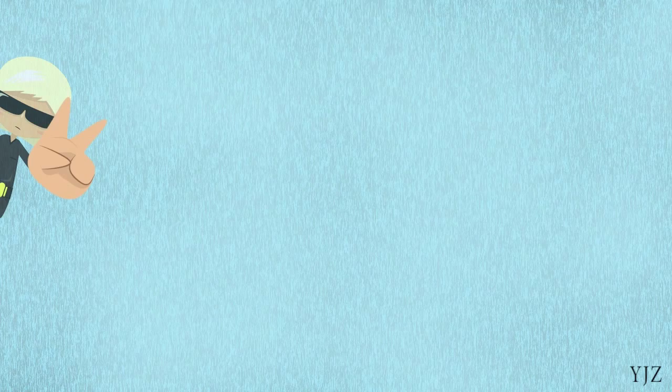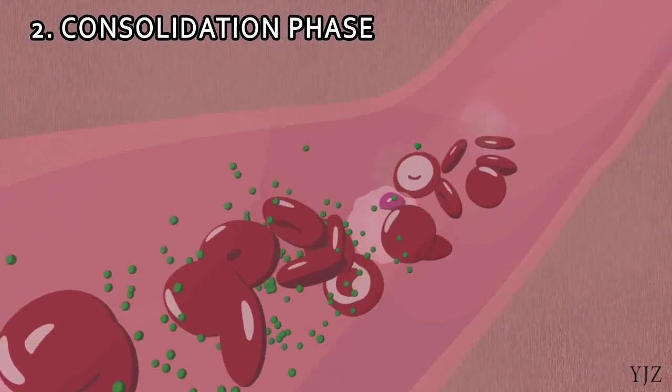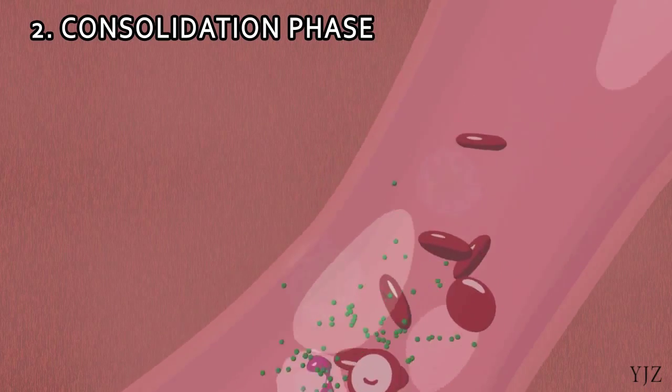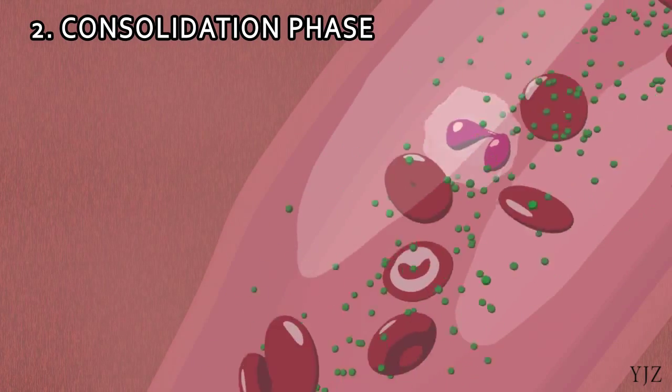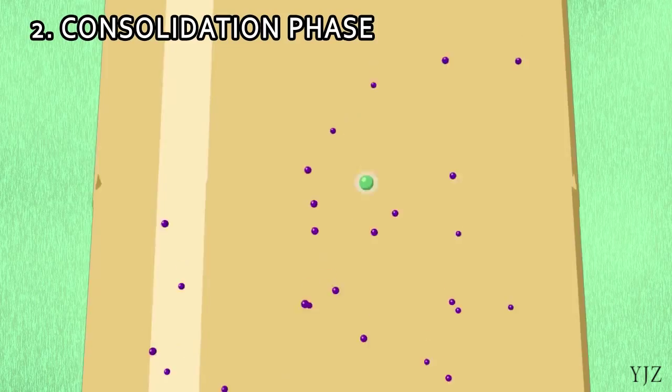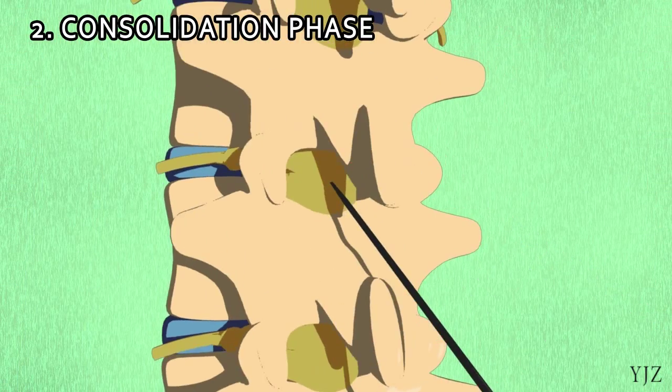The second phase of therapy is called the consolidation phase. This phase continues to decrease the load of leukemia cells. At this point, it is expected that there will be leukemia cells present even when they cannot be detected. This phase is also directed at the protection of the central nervous system with frequent intrathecal chemotherapy.